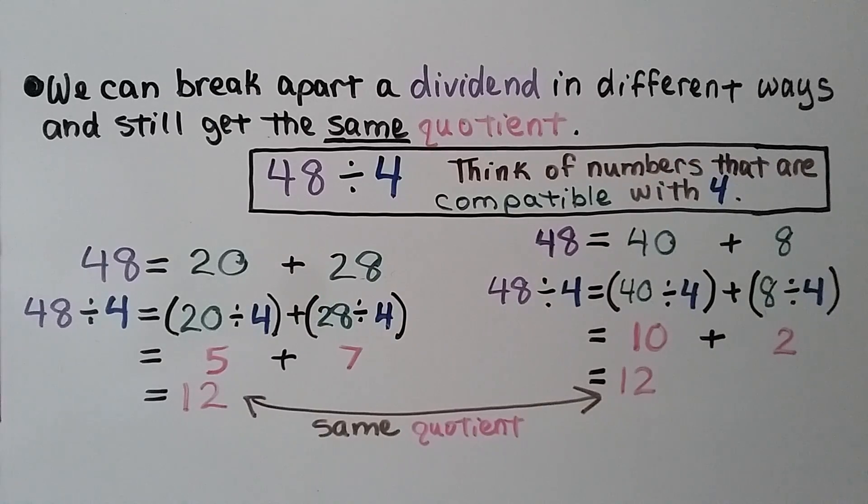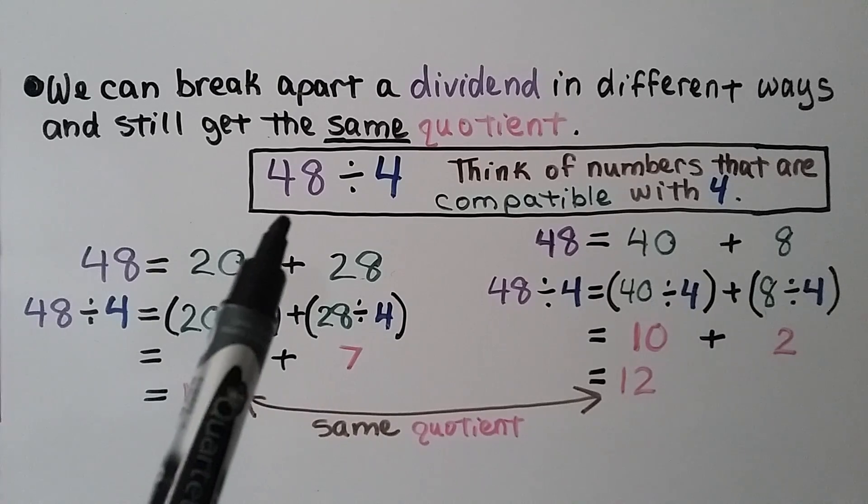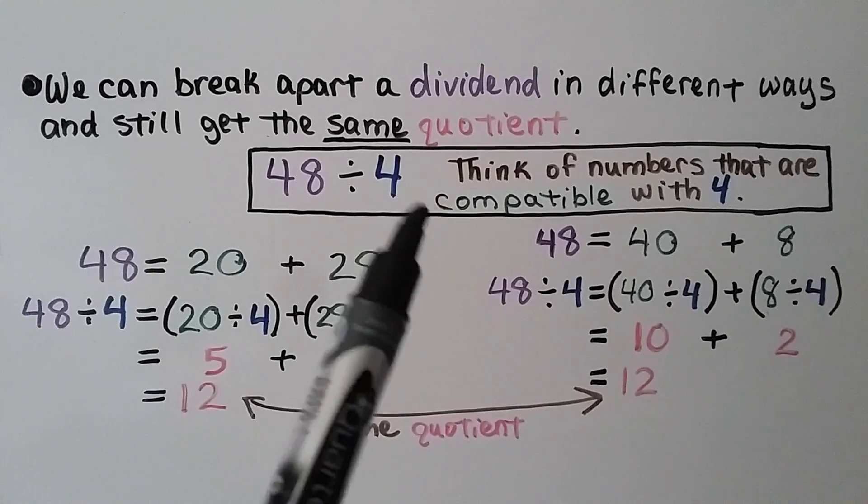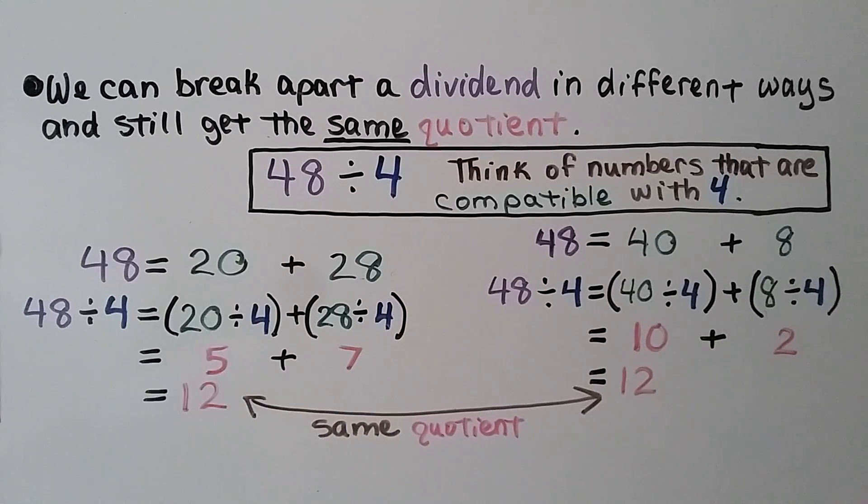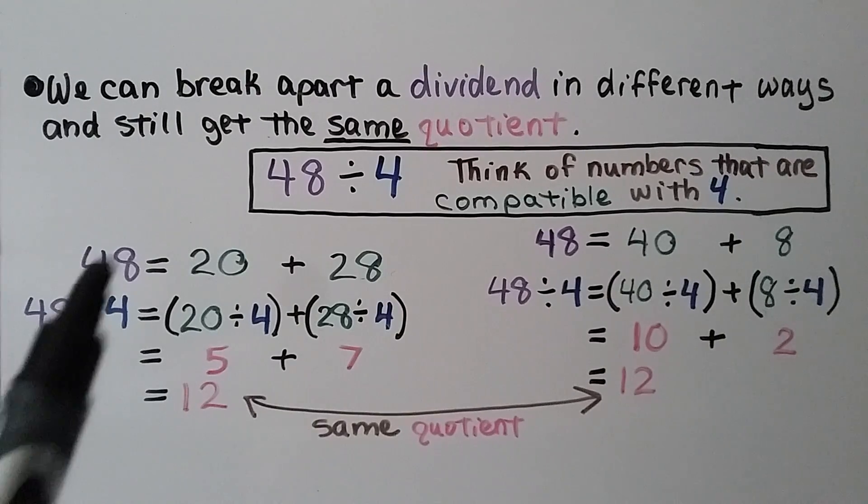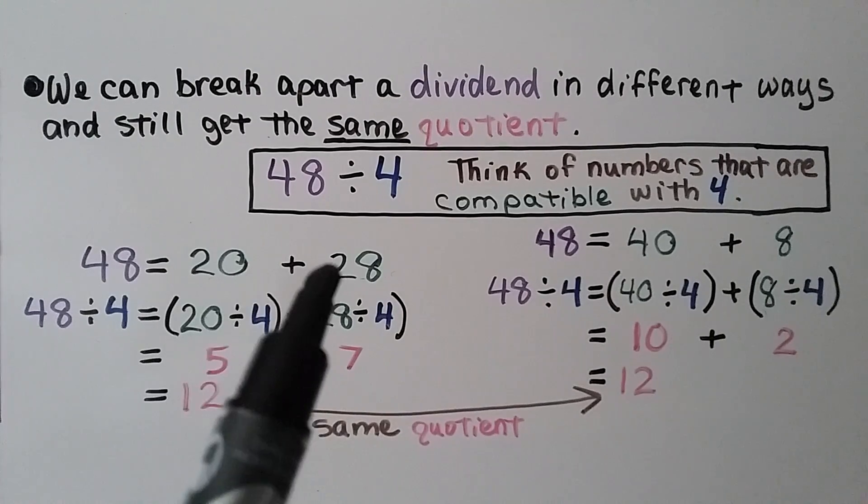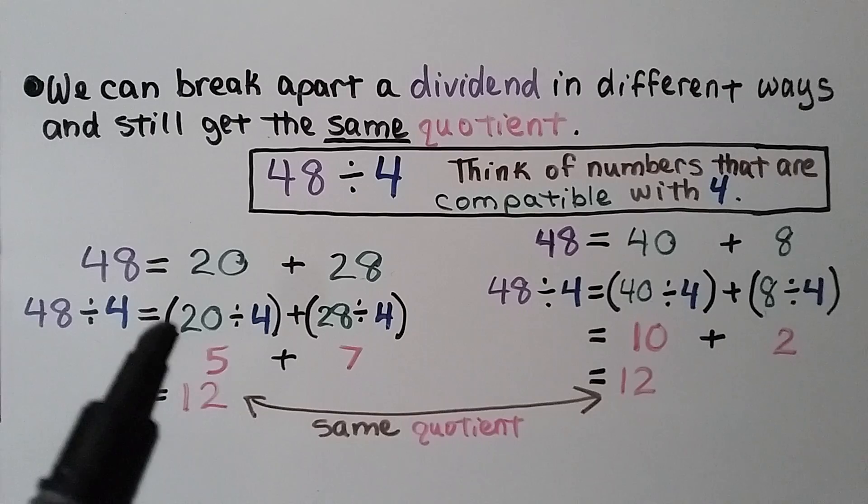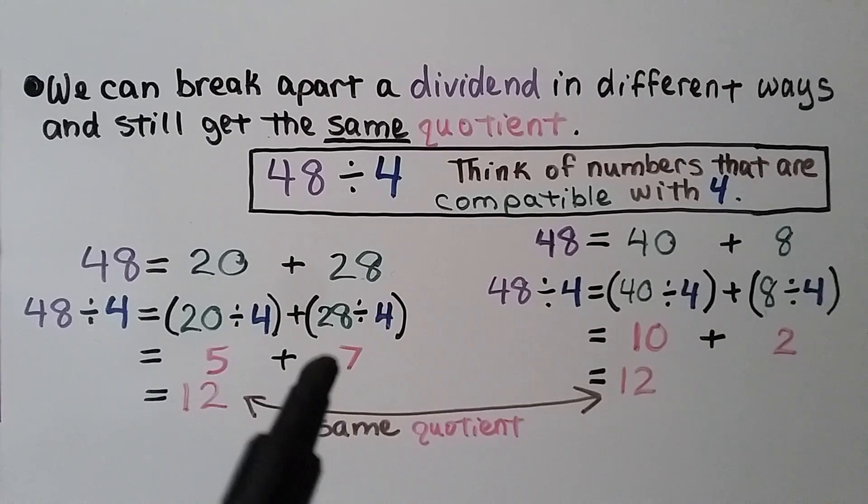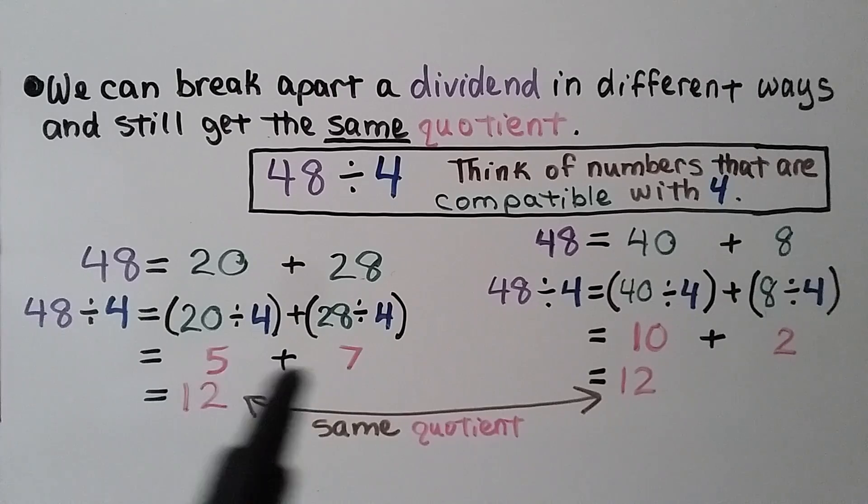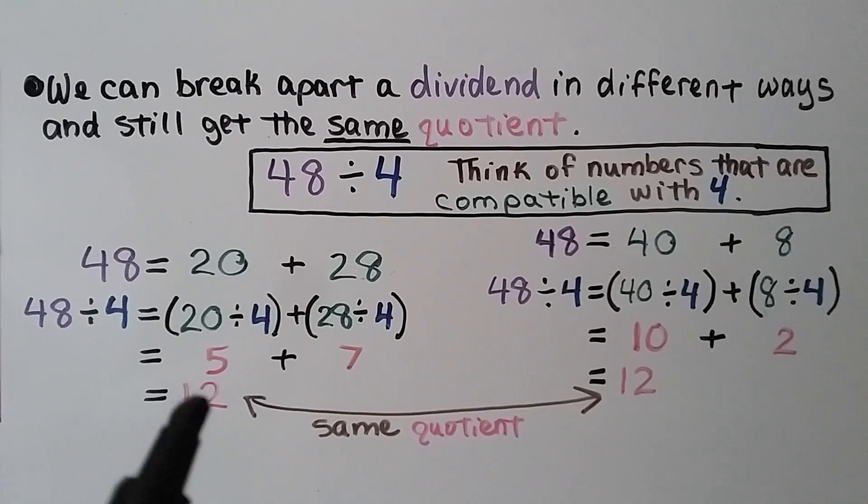We can break apart a dividend in different ways and still get the same quotient. We have 48 divided by 4. We think of numbers that are compatible with 4 that we can break the 48 into. We can do 20 plus 28. So we have 20 divided by 4, which is 5, and 28 divided by 4, which is 7. We add these two quotients together and get a 12.